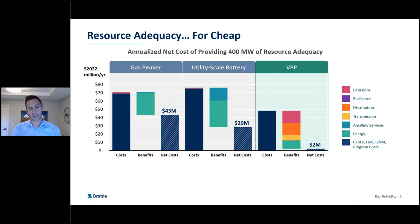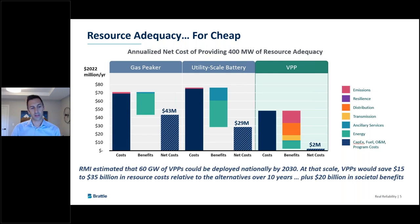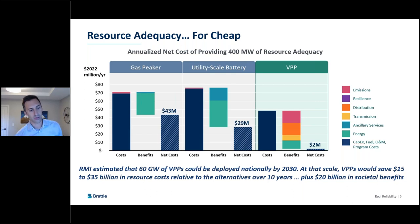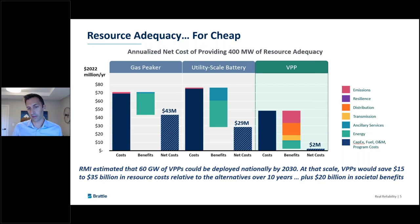We also put this into the context of national scale benefits. RMI estimated that about 60 gigawatts of VPPs could be deployed nationally by 2030. Extrapolating our results to that level, we found that VPPs could save between $15 and $35 billion in resource costs — energy, ancillary services, and T&D investment relative to alternatives — over a 10-year period. Looking beyond resource cost savings to include societal benefits of emissions and resilience, that adds an additional $20 billion in benefits over that period — a remarkable scale of benefits across the entire U.S.